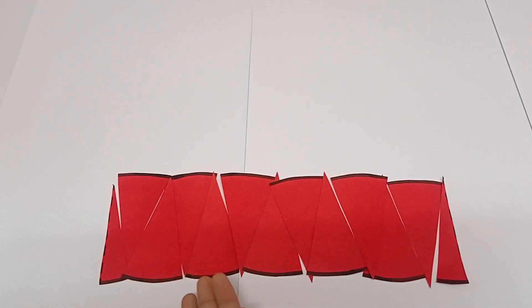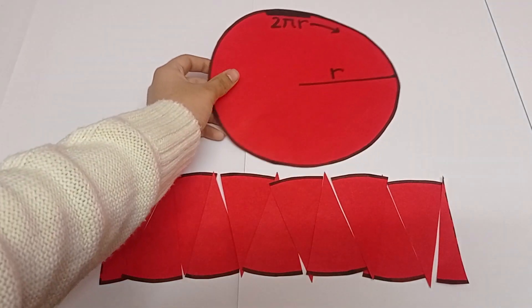Let's now find the area of this rectangle because it would be the same as the area of our original circle.